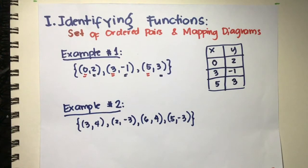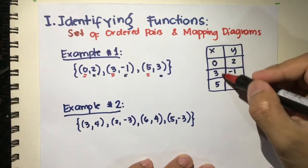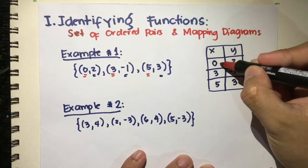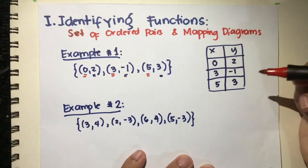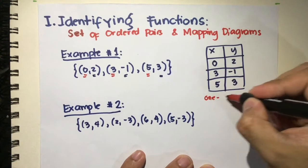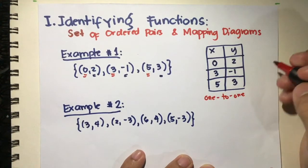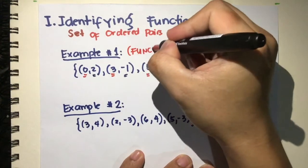It is a function if no two first elements share the same y element, which means all of the x's here must have a unique value for y. So 0 goes to 2, 3 goes to negative 1, and 5 goes to 3. This is a one-to-one type of relation, and since it's one-to-one, it is a function.